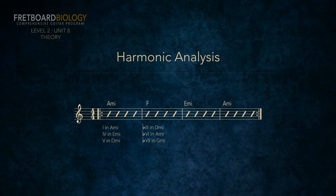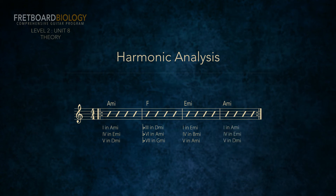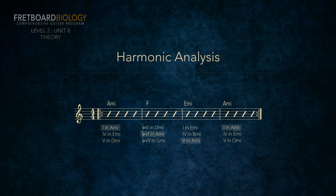Let's determine all the keys to which each chord could belong. A minor could be the one chord in A minor, the four chord in E minor, or the five chord in D minor. F major could be the flat three major chord in D minor, the flat six major chord in A minor, or the flat seven major chord in G minor. E minor could be the one chord in E minor, the four chord in B minor, or the five chord in A minor. And the last A minor chord could be one in A minor, four in E minor, or five in D minor. Is there any one key to which all these chords belong? Yes, it is A minor. So: A minor is 1 minor, F major is flat 6 major, E minor is 5 minor, and A minor again is 1 minor.